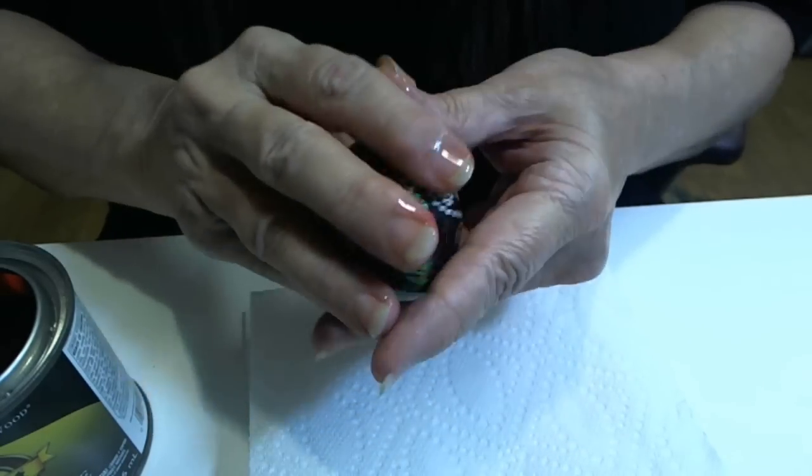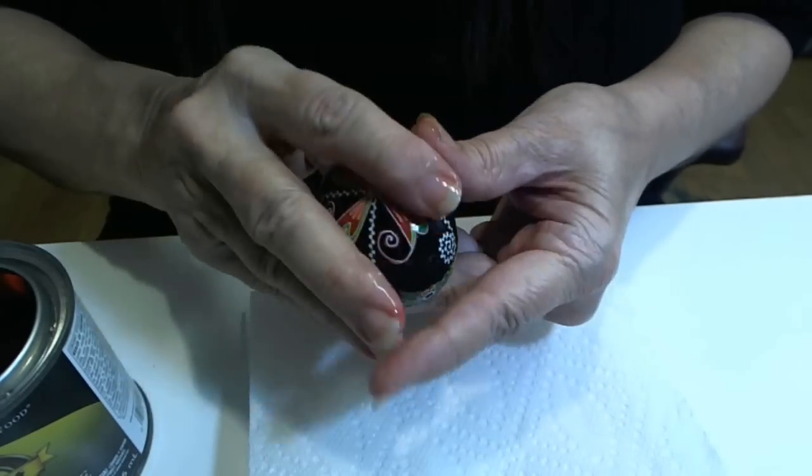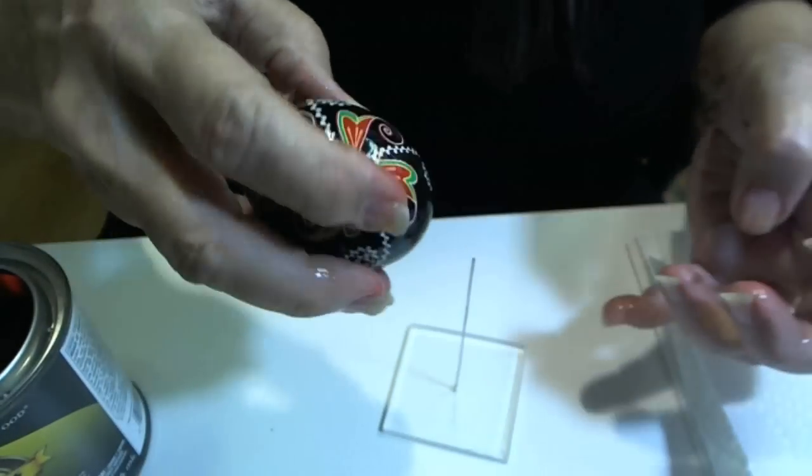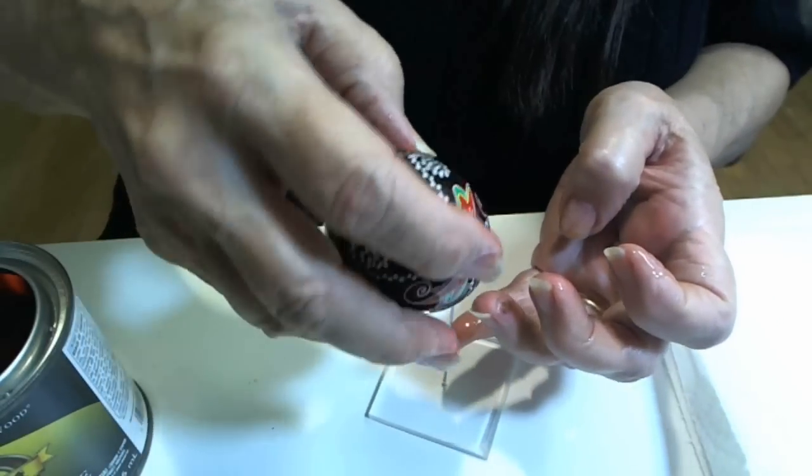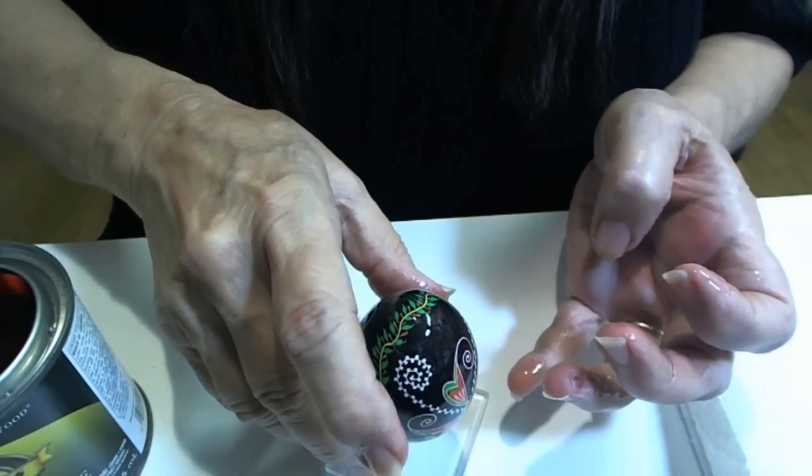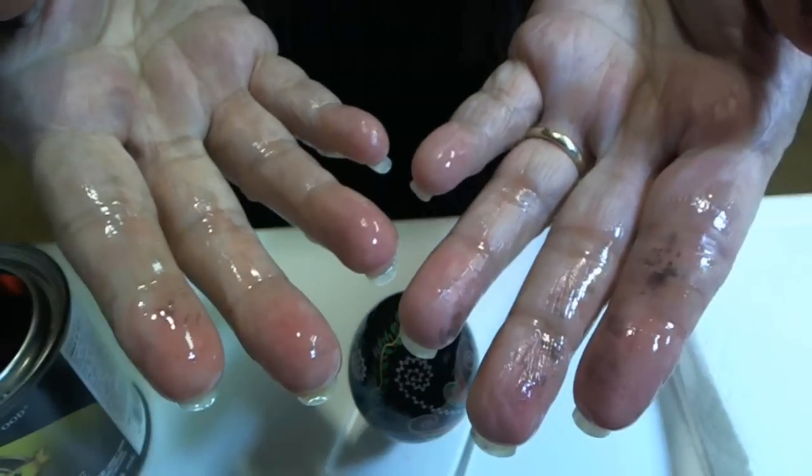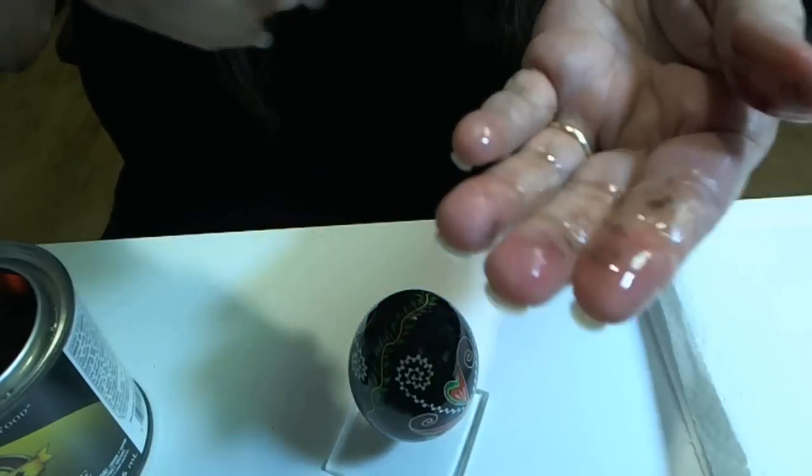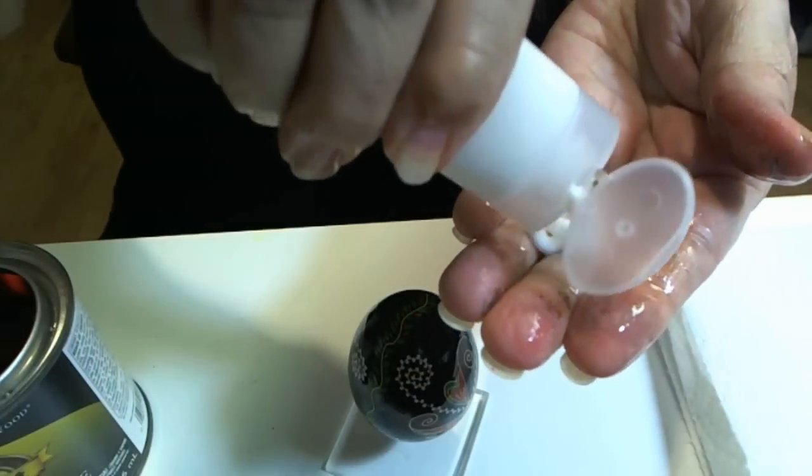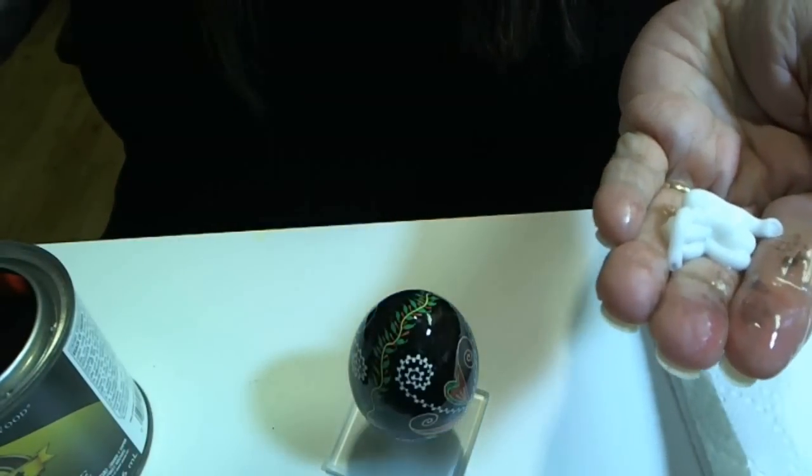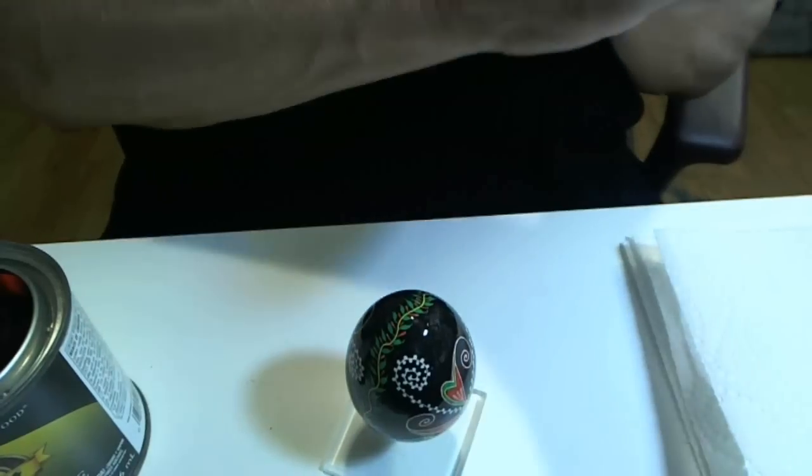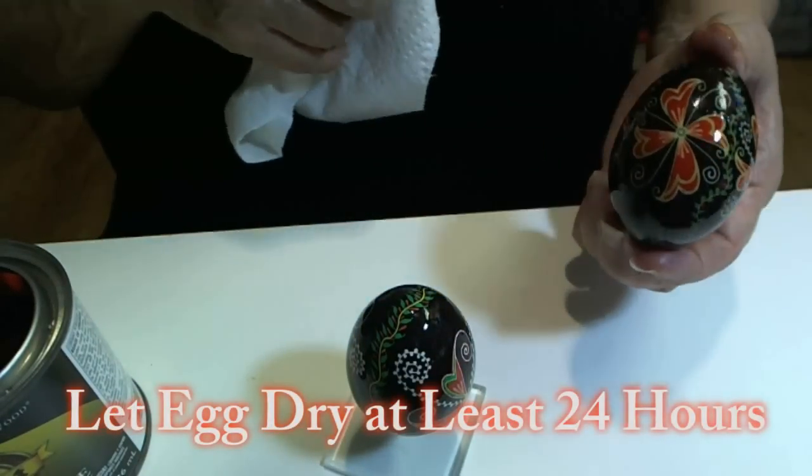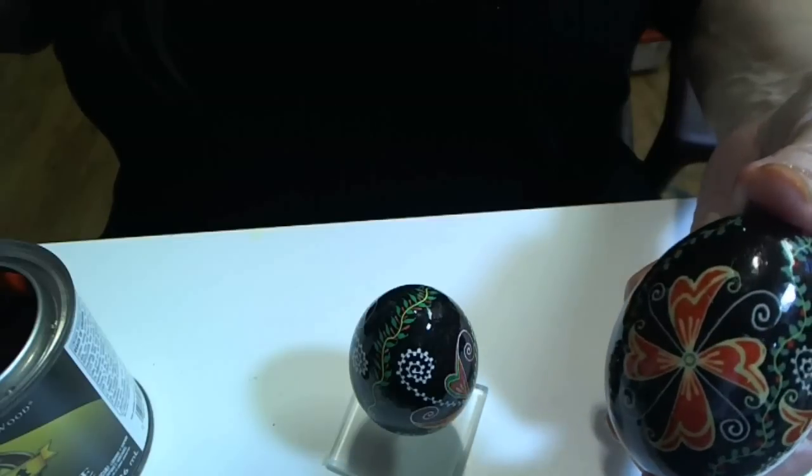I'm applying the varnish to the egg. And now I will let it sit and dry overnight. Now I have varnish on my hands. I have found that using either oil or hand lotion will remove the varnish.